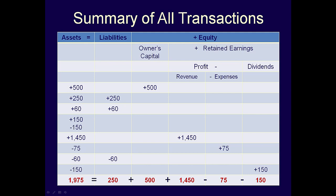We then used the expanded accounting equation to gain additional information. For instance, by using the expanded accounting equation, we know that profit was $1,375, which is made up of revenues of $1,450 less the expenses of $75. However, we still don't have details — for instance, the composition of our assets or what type of expenses we have is unknown. This is important information for decision making by all stakeholders, and the expanded accounting equation still isn't enough.